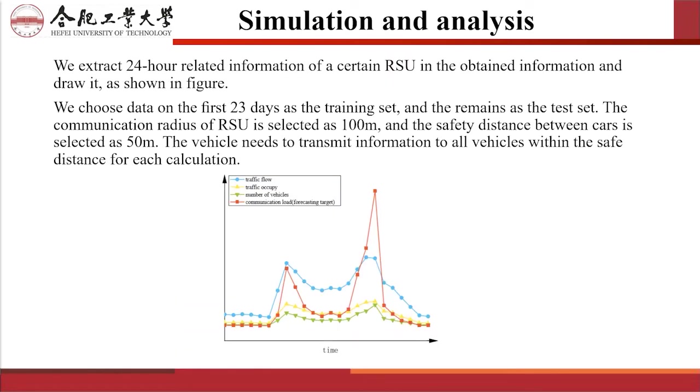We extracted 24-hour related information of a certain RSU in the obtained information and plotted it as shown in the figure. We chose data on the first 23 days as the training set and the remainder as the test set. The communication radius of RSU is selected as 100 meters and the safety distance between cars is selected as 50 meters. The vehicles need to transmit information to all vehicles within the safety distance for each calculation.